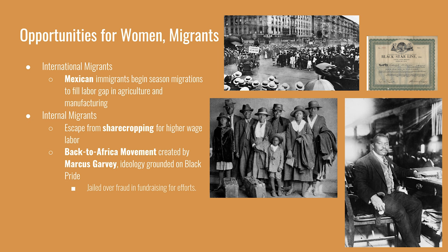The largest wave of internal migrants was the first Great Migration. It was covered in an earlier lecture, and there will be a second Great Migration during World War II. It was composed of African Americans who left the South towards northern, midwestern, and western cities, trying to escape discrimination, segregation, threats of violence, and exploitative labor structures like sharecropping. From this migration grew other African American movements, like Marcus Garvey's Back to Africa Movement — he wanted to get Black Americans experiencing discrimination in the United States and create a colony somewhere in Africa.